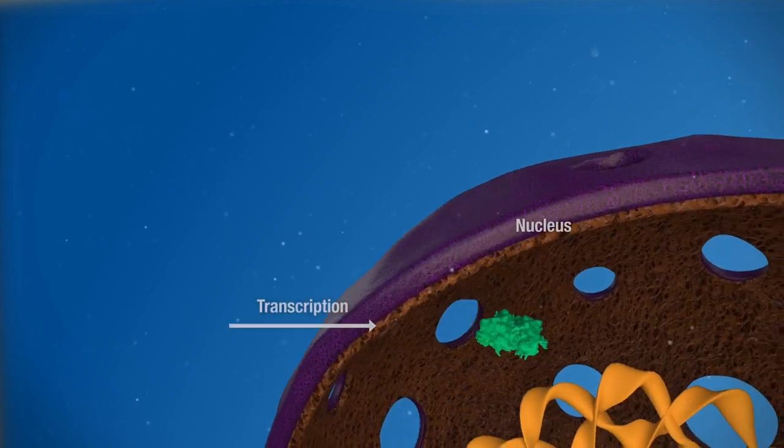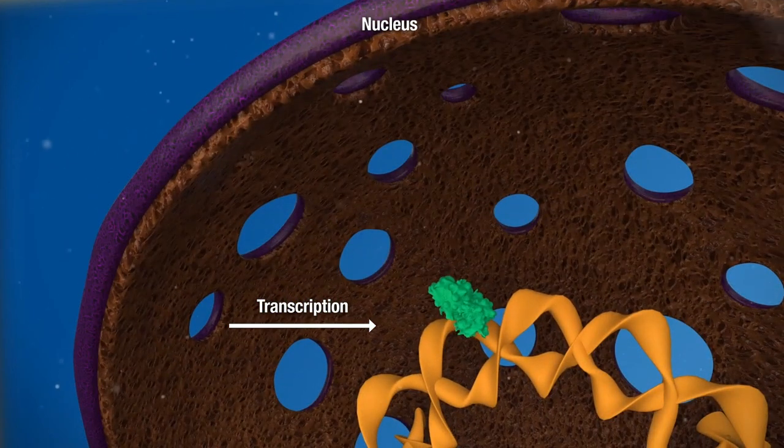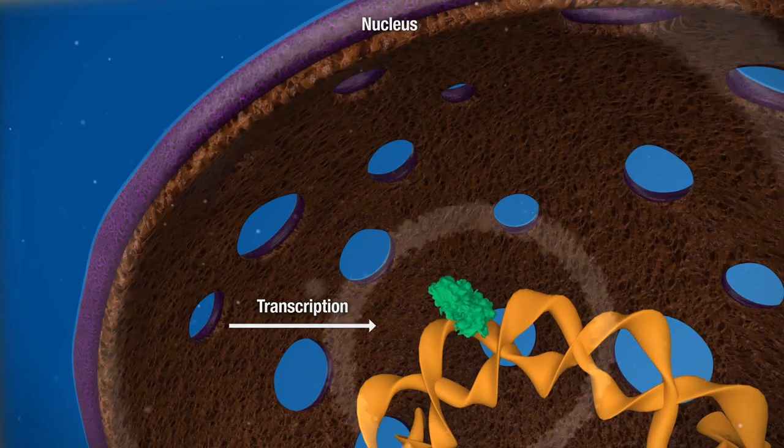Phosphorylated STATs dimerize and translocate into the cell nucleus, where they regulate the transcription of a wide range of STAT-dependent genes.